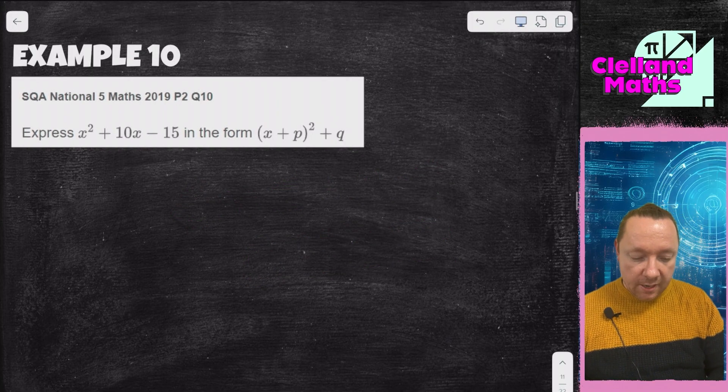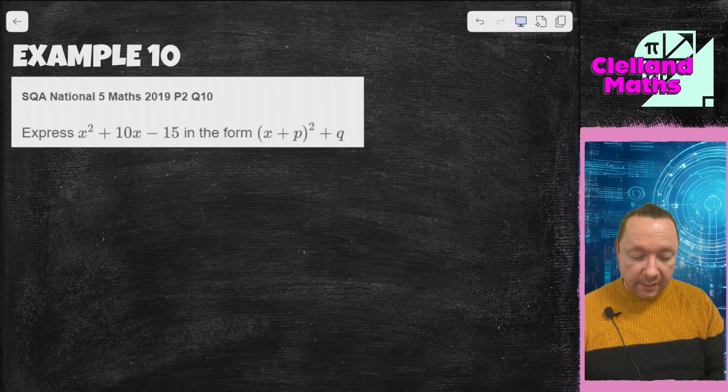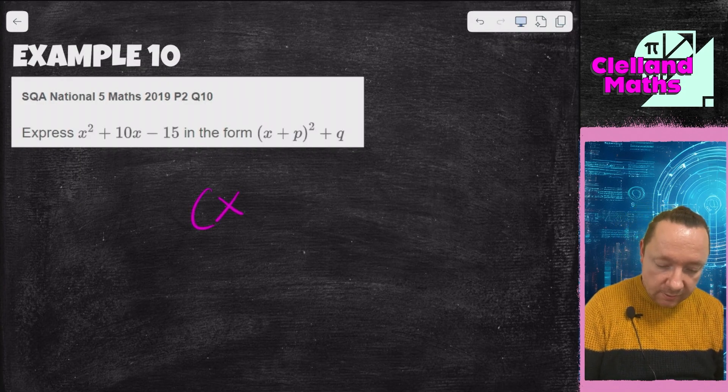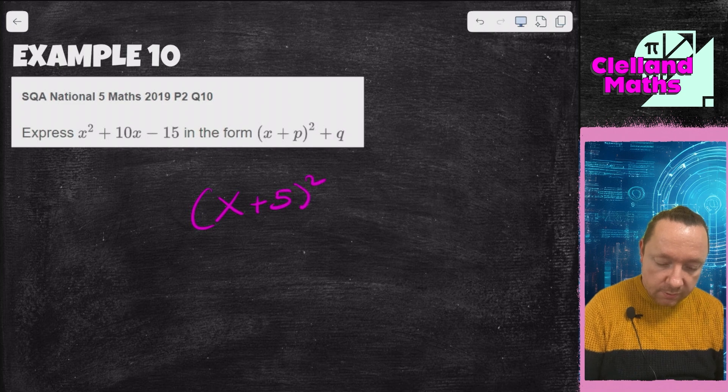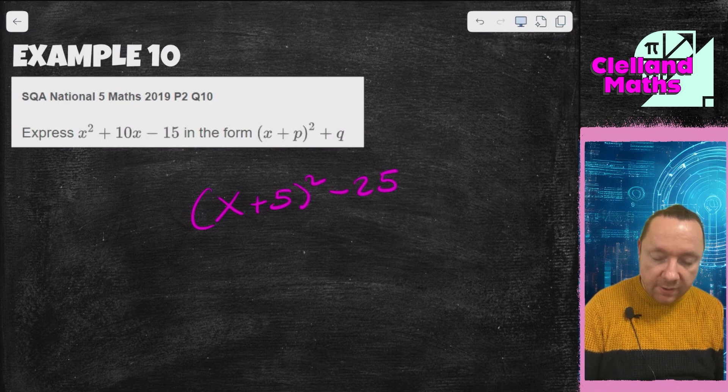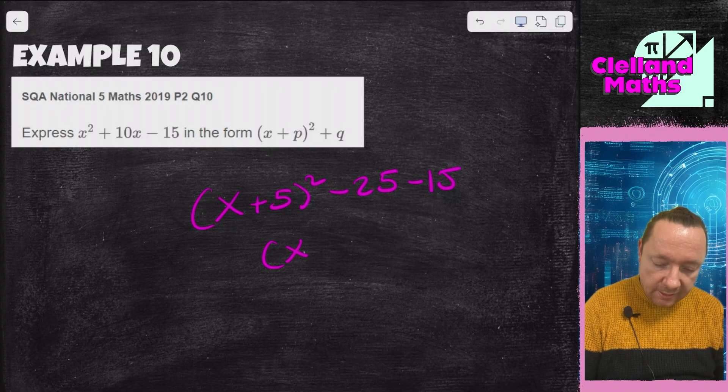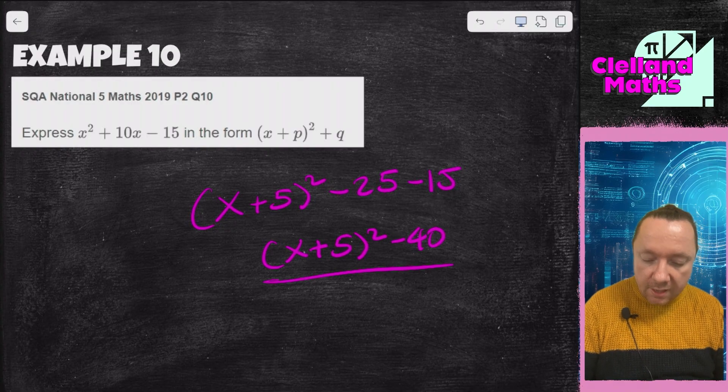Example 10, National Five Maths 2019 paper 2 question 10. x squared plus 10x minus 15. x add 5 squared, take away 25 then, 5 times 5, but I've still got minus 15. x add 5 squared minus 40. And we're done there.